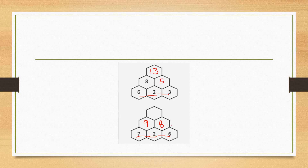We have to add 8 and 6. Then we have to add 8 and 8 — 16, 17. So 9 plus 8 is equal to 17. Finally we got the answer 17.